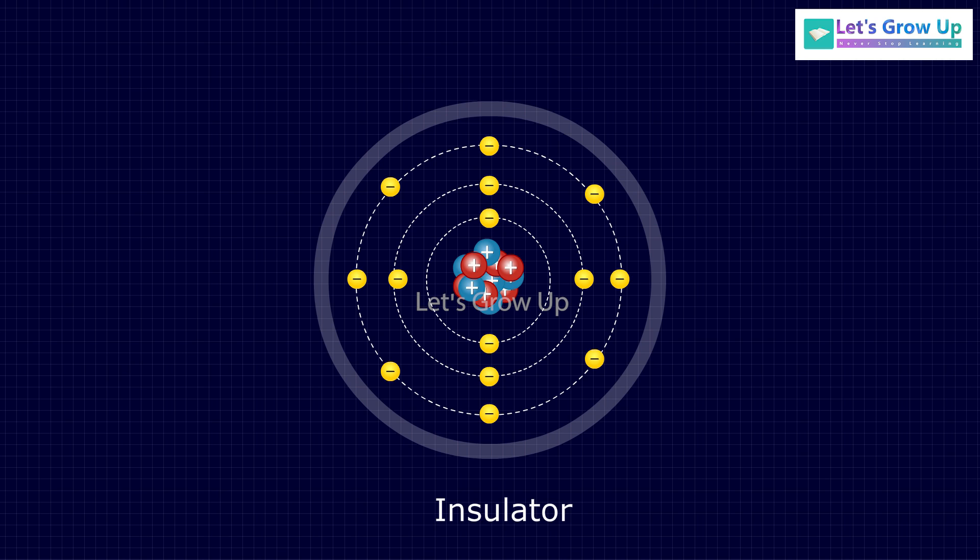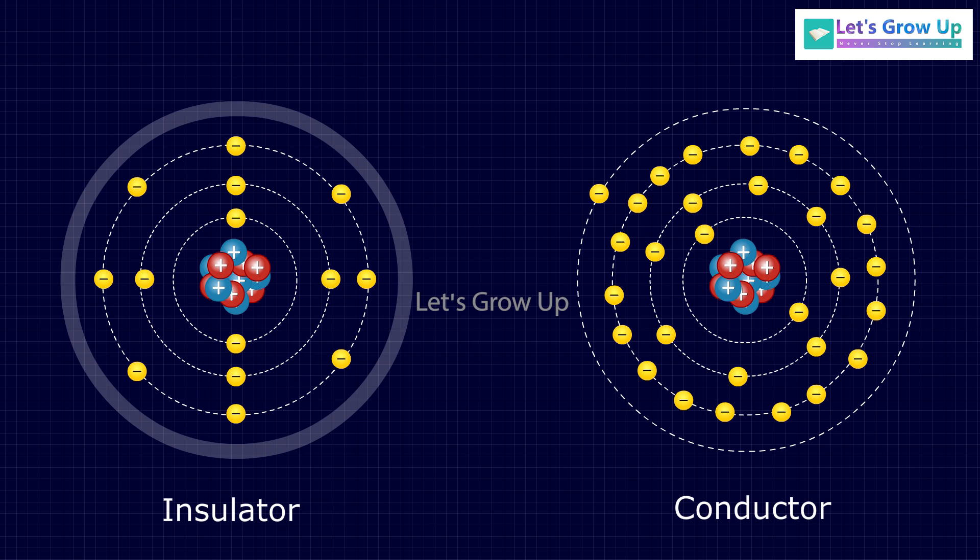Insulators are materials that do not let electric current flow through them. This material contains atoms that hold their electrons very tightly. See this diagram. The electrons of the conductor's atom are free, where the electrons of the insulators are tight.